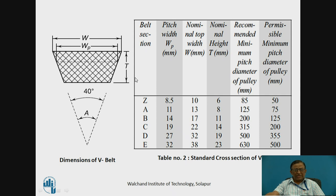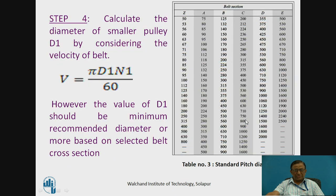The standard cross section sizes are provided for different cross sections. If section B is selected, the trapezoidal cross section will have a certain depth T, pitch width, and nominal top width — values provided in the standard table. Additionally, this belt must be operated with a minimum smaller pulley diameter of 200 mm. Using a diameter less than this adds additional bending stresses in the belt, which become unaccountable in certain cases.